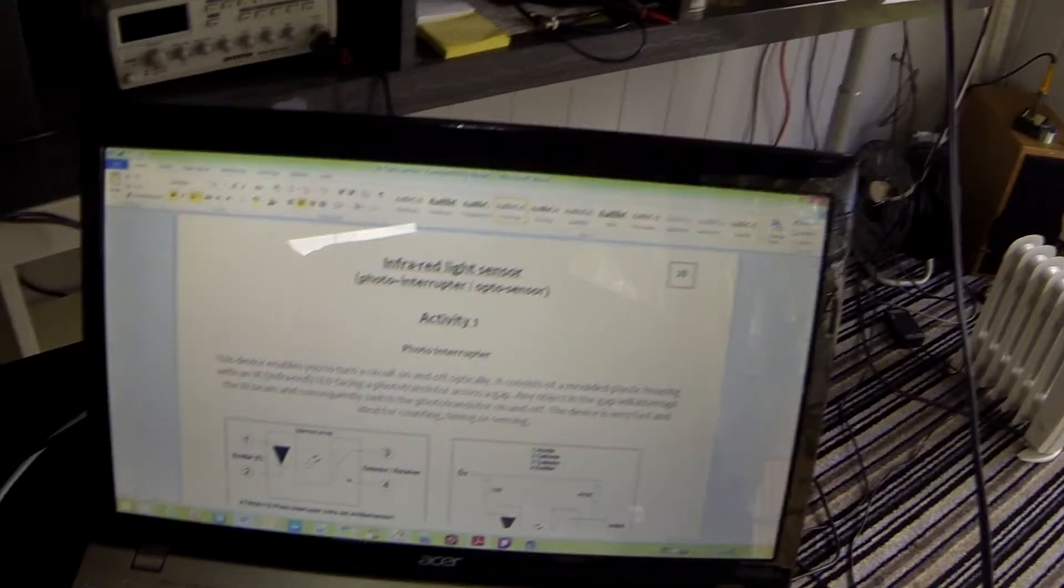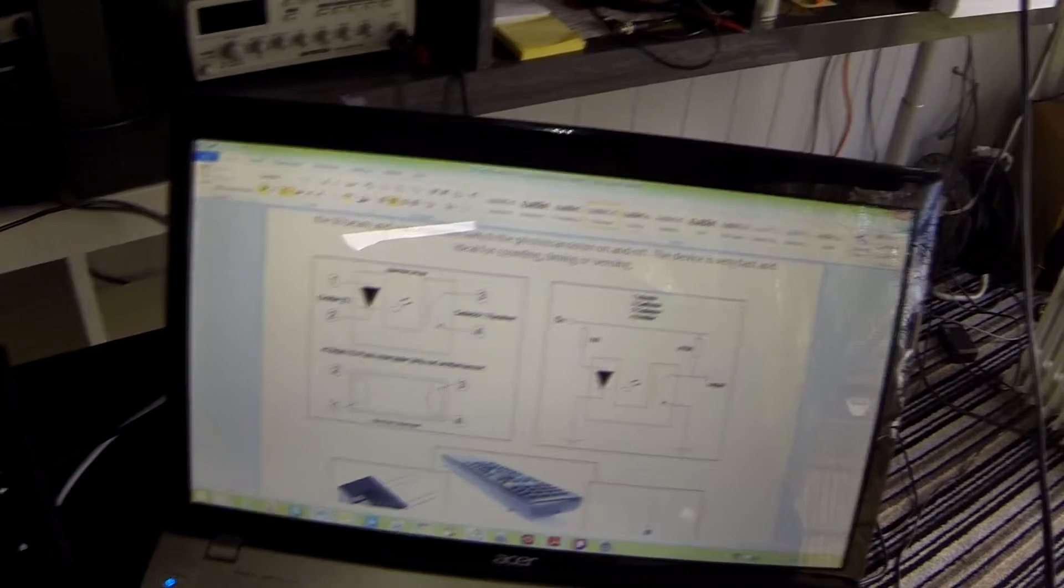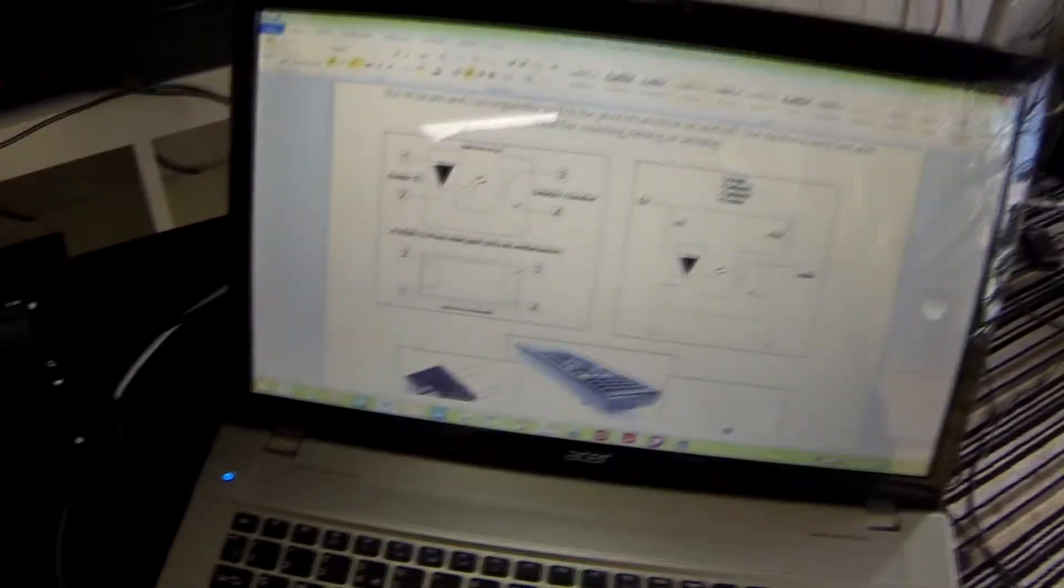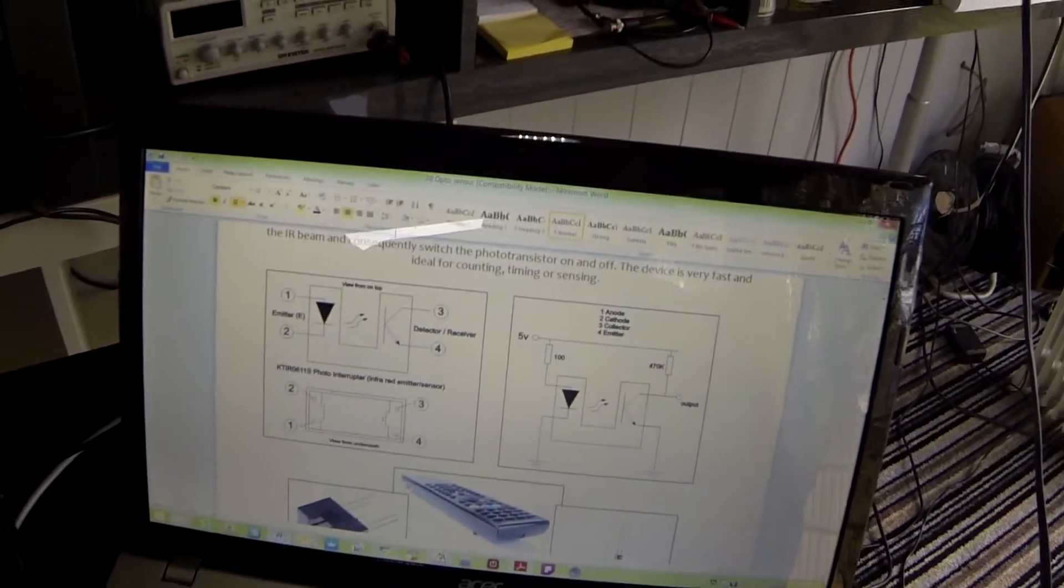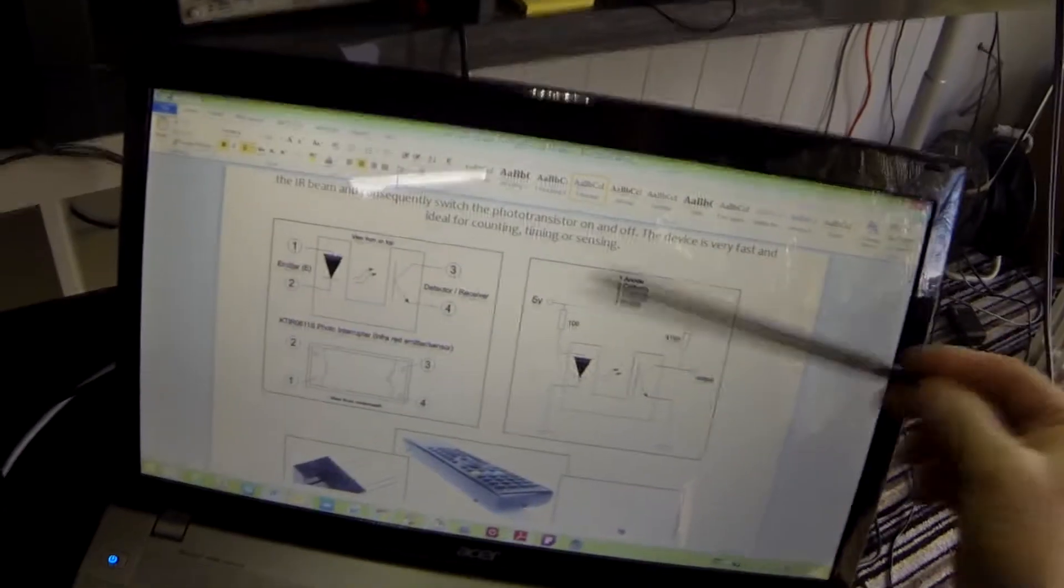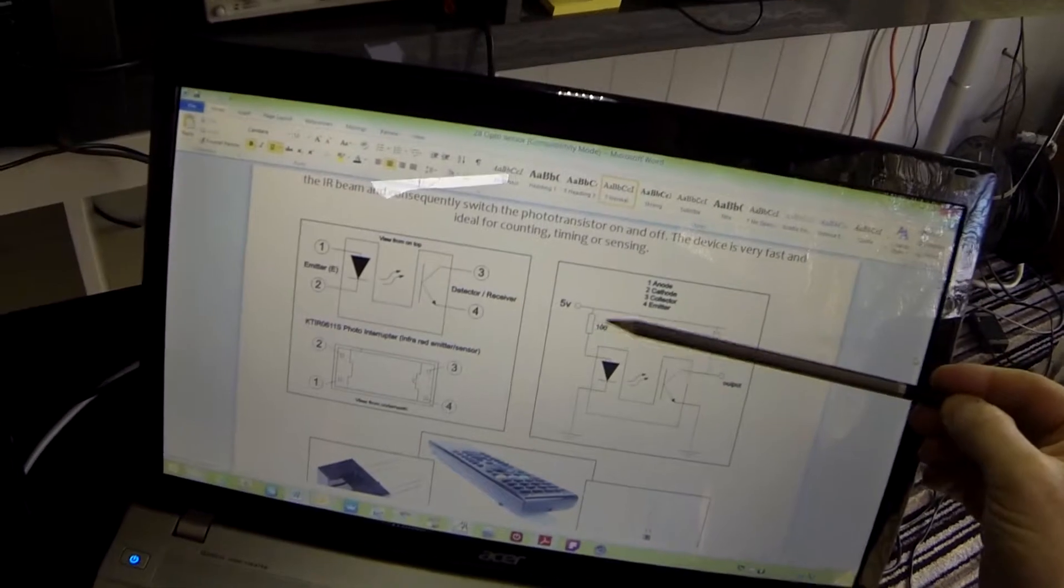I'm going to be using a KTIR0611 which is available from places like Rapid and this is the circuit diagram that I'm going to be using that I've developed.